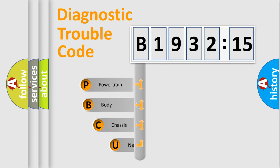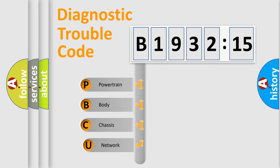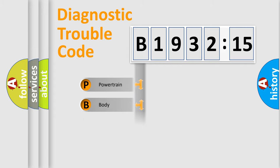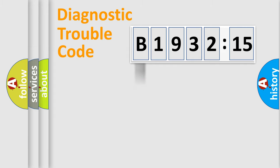First, let's look at the history of diagnostic fault code composition according to the OBD2 protocol, which is unified for all automakers since 2000. We divide the electric system of the automobile into four basic units.